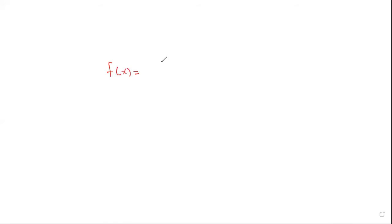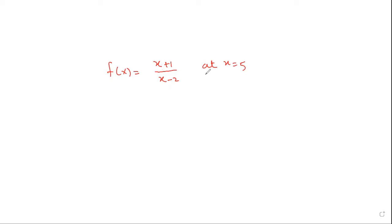The question is f(x) equals x plus one over x minus two, at x equals five. We are asked to find the slope of the tangent to this rational function at x equals five.